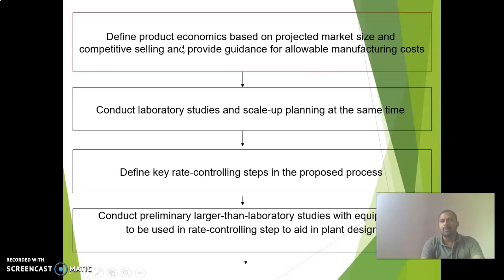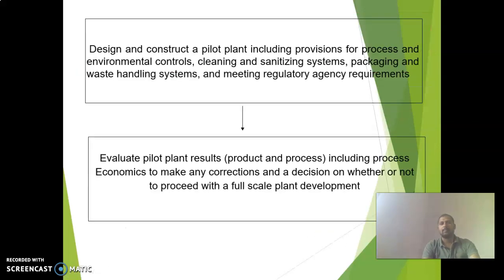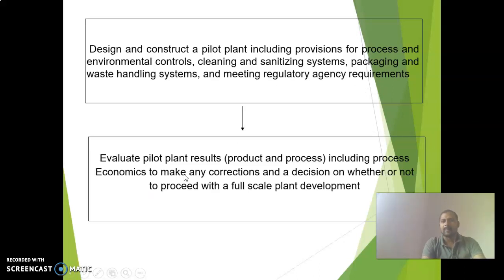Steps involved in scale-up: first, define product economics based on projected market size, competitive selling, and allowable manufacturing cost. Then conduct laboratory studies and scale-up planning simultaneously. Define key rate-controlling steps in the proposed process. Conduct larger-than-laboratory studies with equipment for rate-controlling steps. Design and construct a pilot plant including process and environmental controls, cleaning and sanitizing systems, packaging, waste handling, and regulatory compliance. Finally, evaluate pilot plant results to decide whether to proceed with full-scale plant development.